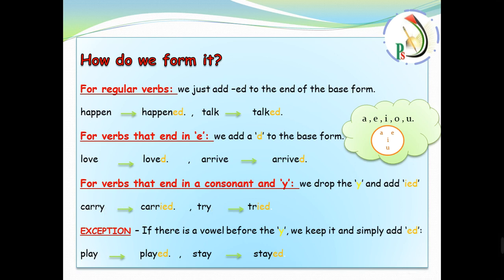We have here an exception. If there is a vowel before the 'y', we keep it and simply add 'e-d'. Be careful. Here the verb ends with 'y', but there is a vowel before this 'y'. Not like here, 'y' and the previous letter is consonant, not vowel. So we add 'i-e-d' and we drop 'y'. But here we have play. We have a vowel. When you see a vowel before the 'y', keep the 'y' and just add 'e-d'. Play, played. Stay, stayed. When you see a vowel before the 'y', keep the 'e-d'.